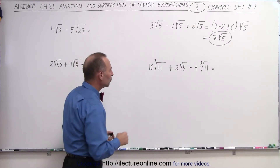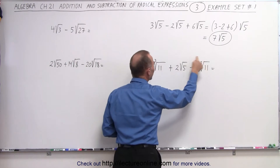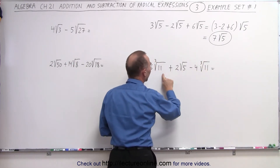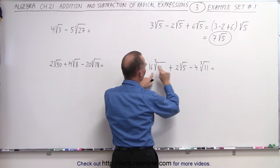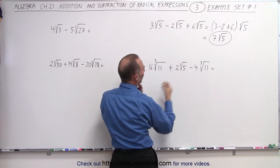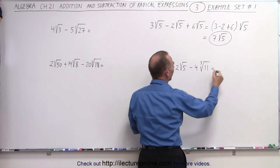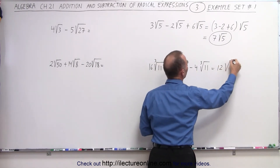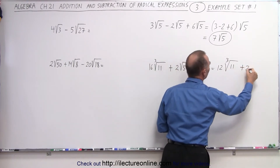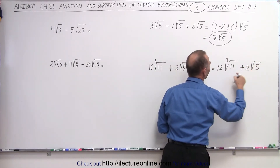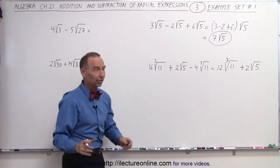On our next example, notice that 2 of the 3 are identical — they both have the same index and the same radicand. But the third one is different, so we can subtract this from this, but there's nothing we can do about the third one. So we have 16 minus 4, which is 12 times the cube root of 11, plus 2 times the square root of 5. There's no way we can make these two the same, so that's as simple as it goes.